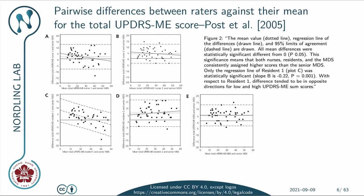Post et al. in 2005 demonstrated the subjectivity of the rating by applying the current MDS-UPDRS scale. This is shown in terms of pairwise differences between raters against their mean for the total UPDRS motor exam part. What we can see is that depending on which people have been paired, we have very different variation and correlation between them.